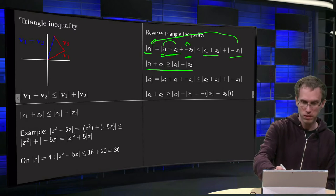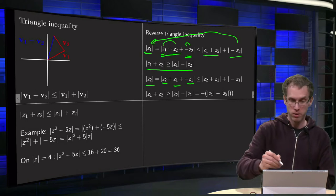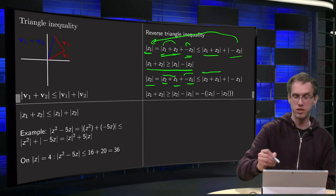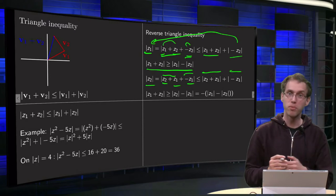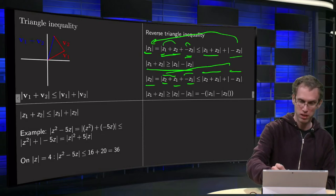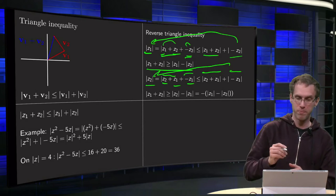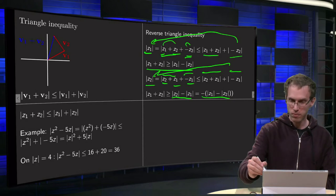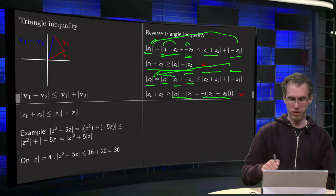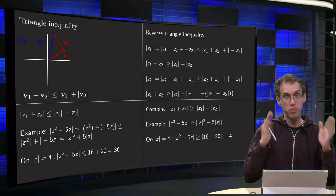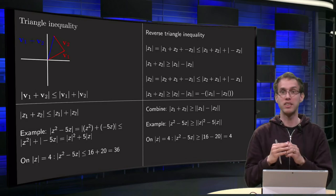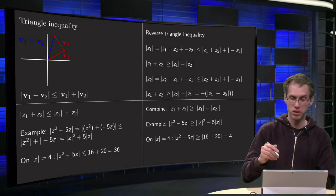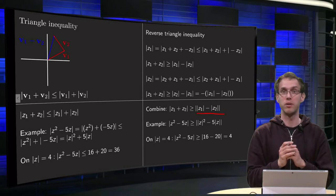You can play the same game with z2: write z2 equals z2 plus z1 minus z1. Taking these together, the norm of z2 plus z1 minus z1 is smaller than or equal to the norm of z2 plus z1 plus the norm of minus z1. Since the norm of minus z1 equals the norm of z1, bringing this to the other side gives: the norm of z2 plus z1 is bigger than or equal to the norm of z2 minus the norm of z1, which equals minus the norm of z1 minus the norm of z2. Combining these two results, the norm of z1 plus z2 is bigger than or equal to the absolute value of the norm of z1 minus the norm of z2 — that is the reverse triangle inequality.